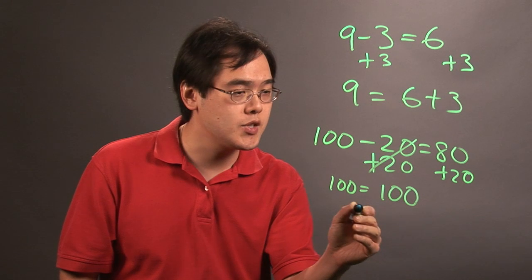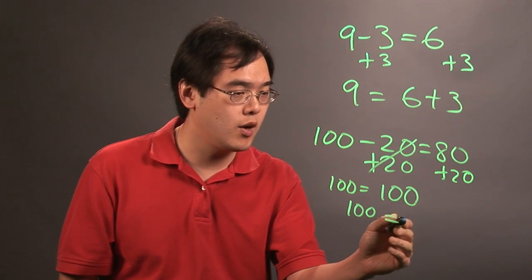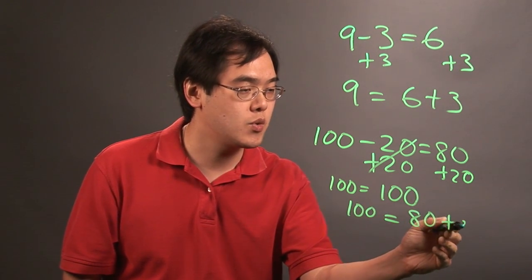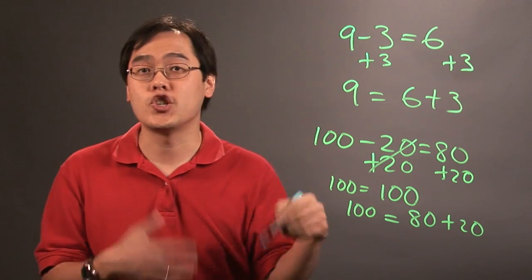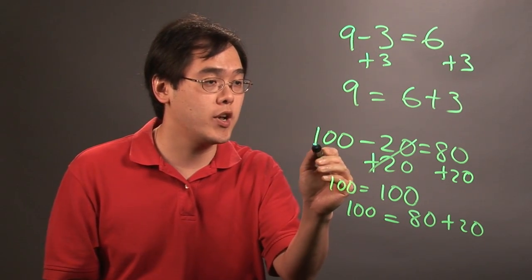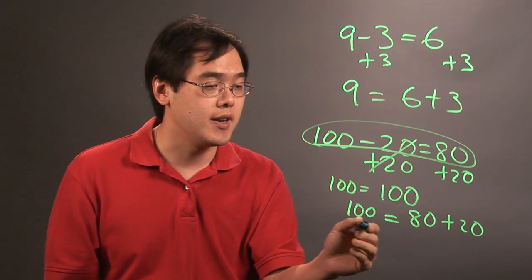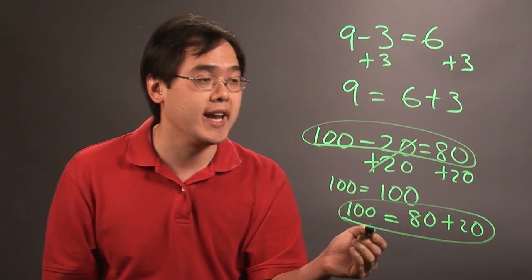Or you can think of it this way: leave the two numbers as they are. 100 equals 80 plus 20, and you have it checked for you. Because if it's true that 100 minus 20 equals 80, then it also has to be true that 100 equals 80 plus 20.